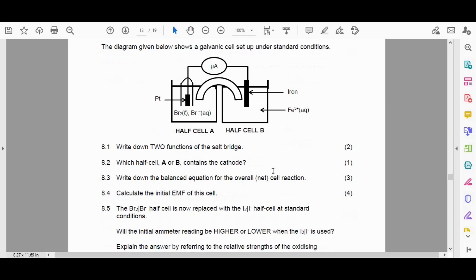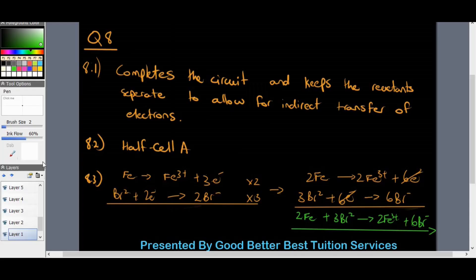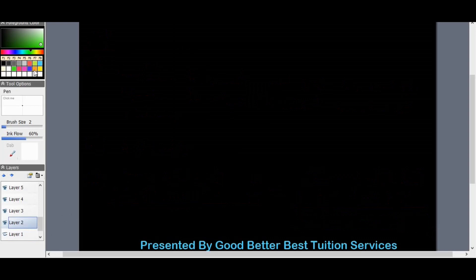8.4. Simple one. Calculate the initial EMF of the cell. Okay. So I'm going to go back to my orange color. And 8.4. So we write down the formula.